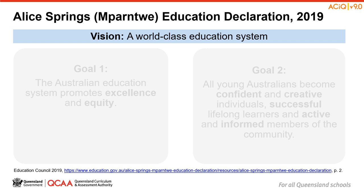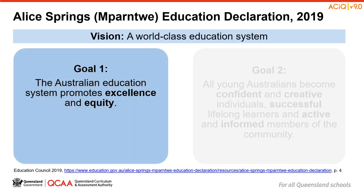The vision expressed in the Alice Springs–Mparntwe Education Declaration 2019 is for a world-class education system that encourages and supports every student to be the very best they can be, no matter where they live or what kind of learning challenges they may face. With this in mind, the declaration sets out two distinct but interrelated goals. The first is that the Australian education system promotes excellence and equity. As we plan for Australian Curriculum Version 9, we want to consider how our plans can enhance equity for all and promote the highest quality teaching, learning and assessment experiences for our students.